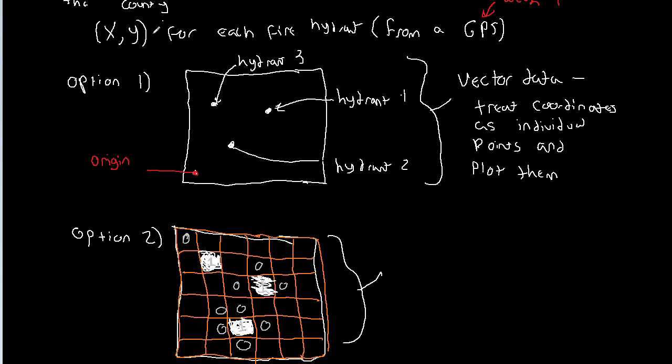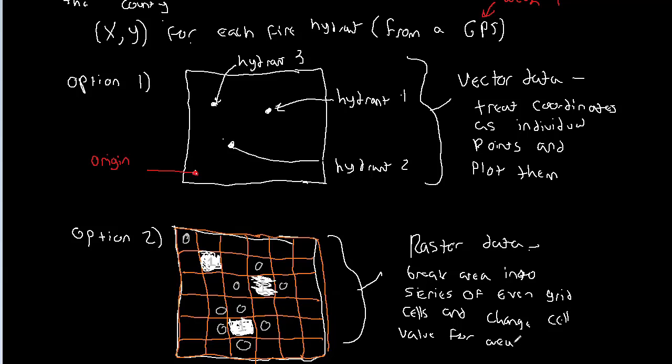So if we go this route instead, where instead of plotting each x and y, like think about like a Cartesian coordinate, if instead of doing that, we break the area up into a series of evenly sized grid cells and then record the location where the hydrant is in a grid cell with a one instead of a zero, this is an example of raster data. So with raster data, break area into series of even grid cells and change cell value for areas where hydrants are.